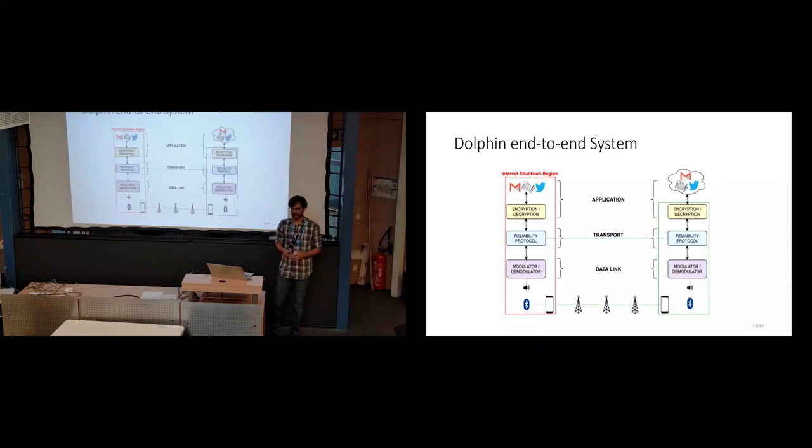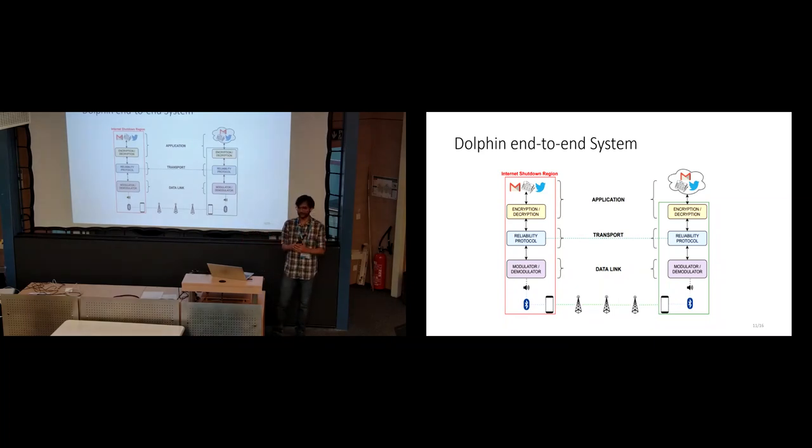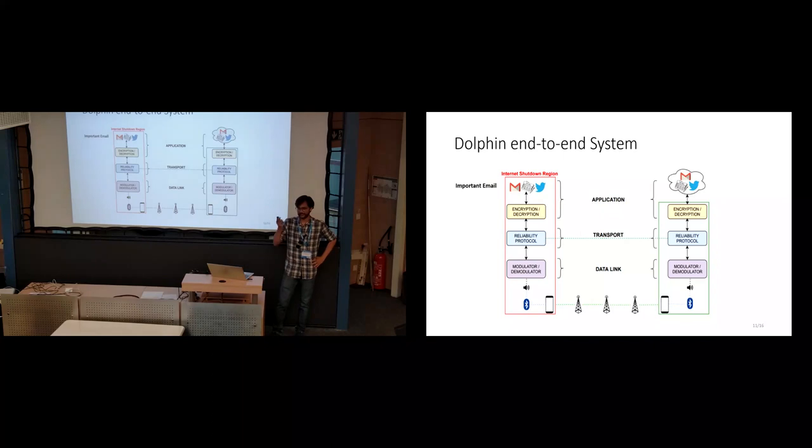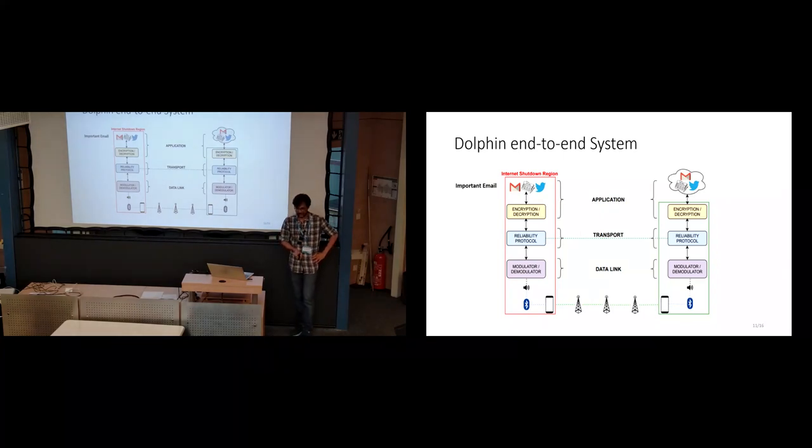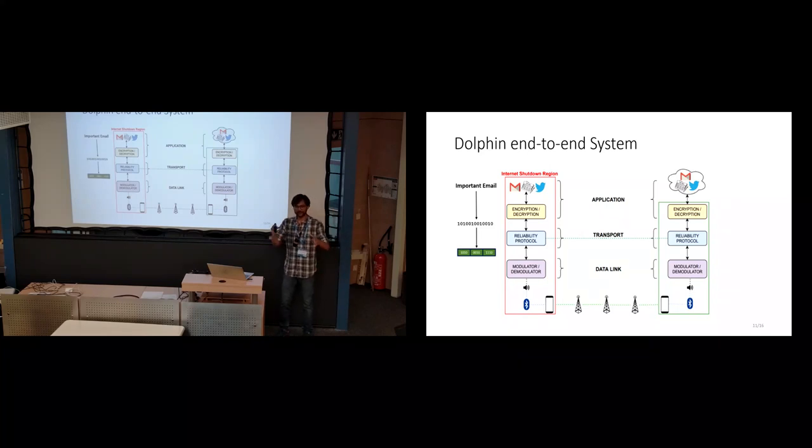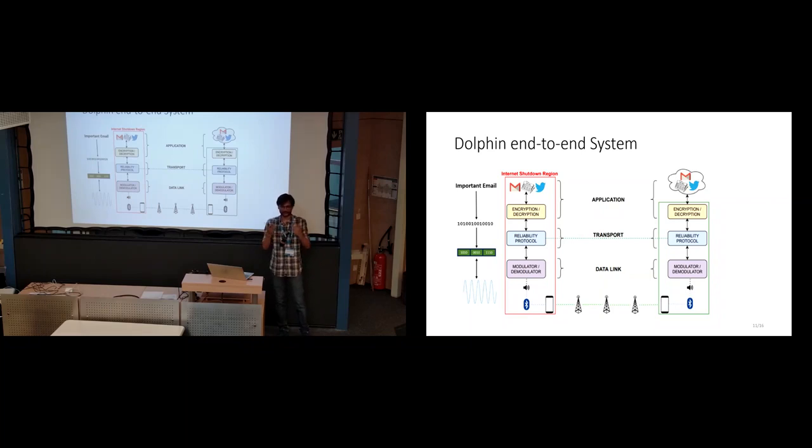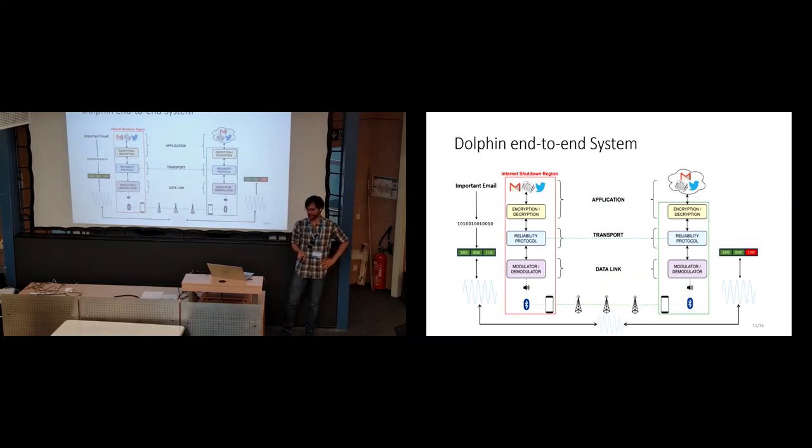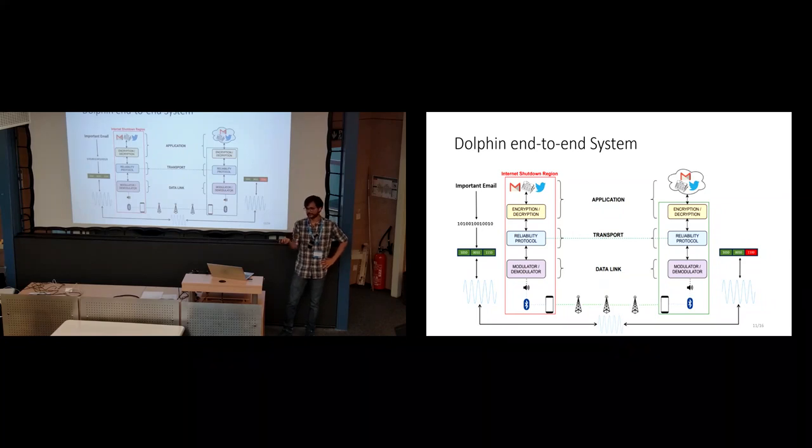This whole system, the complete stack, looks something like this, where we divide the working of it in different layers from application to transport to data link. If you take an example, let's say you have some important email that you have to send. It will first go through this encryption decryption block where it is converted into random bits. It will then, by the reliability layer, be arranged in packets and chunks with the packet structure. And eventually, it will be converted by the modulator to this audio signal that you can transfer over the cellular network. It will reach the other end, and the reverse process will be repeated. The reliability protocol will detect if there is some error and try to retransmit and get it back. Finally, it will go to the upper layers and eventually to the application on the other end.